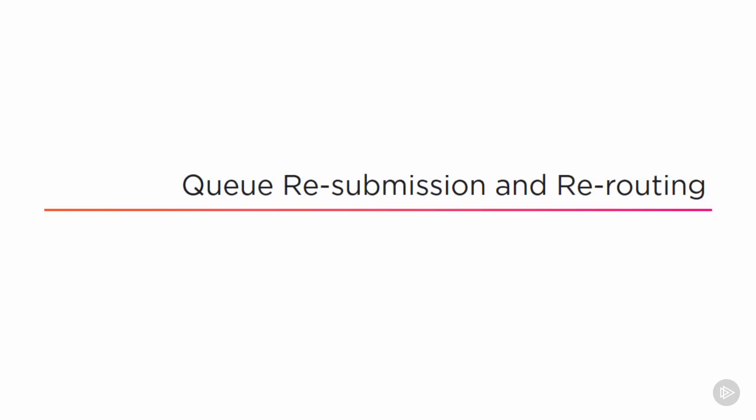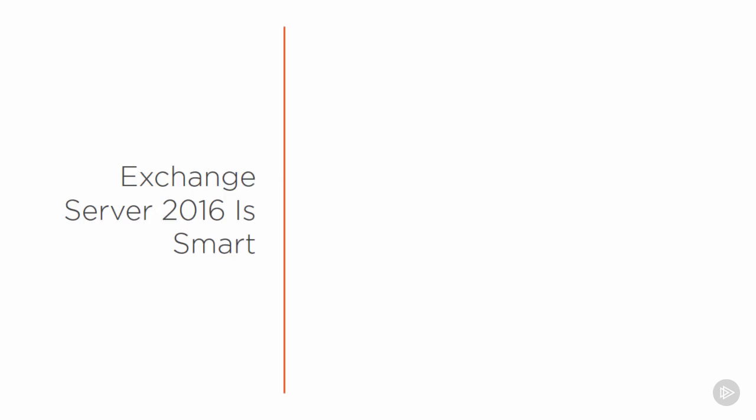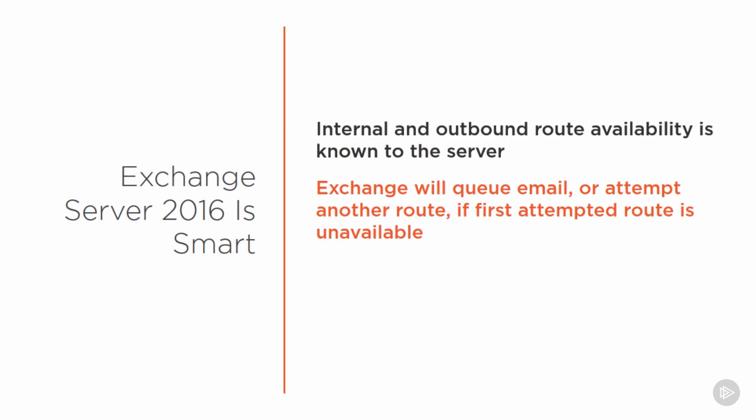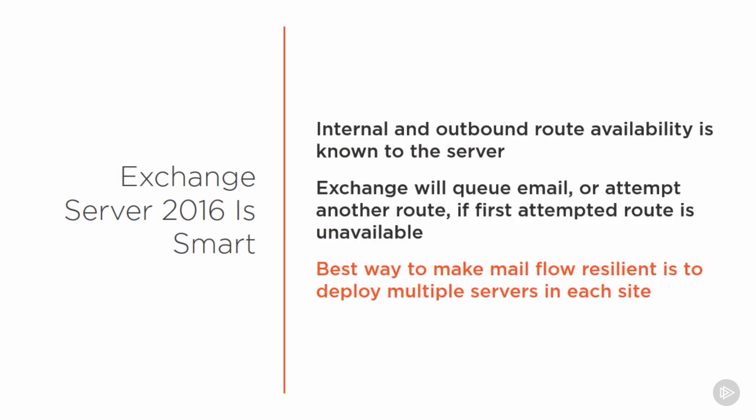Finally, let's look at queue resubmission and rerouting. Hopefully at this stage of the course you've realized that Exchange is pretty smart when it comes to routing email. Exchange knows when routes are unavailable because connectivity to servers over those routes fails, and is clever enough to try other routes or queue and retry messages. Therefore, the best way to make mail flow resilient to failure is to deploy multiple servers into multiple sites and establish multiple inbound and outbound routes using MX records and send connectors. But what about when you need to deal with mail that is stuck in a queue? If mail can't find a route to its destination, it will queue.